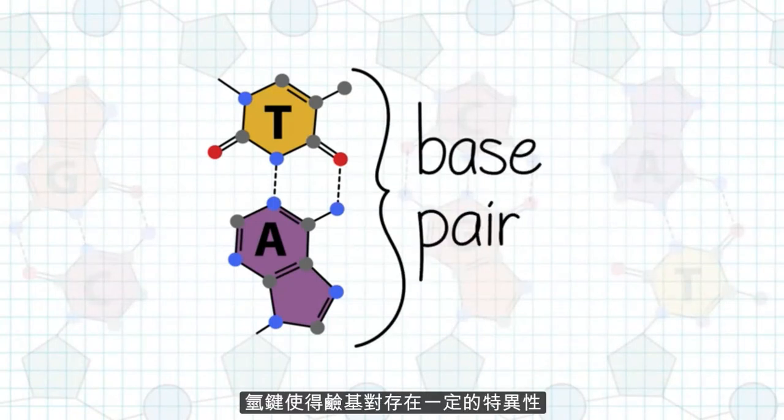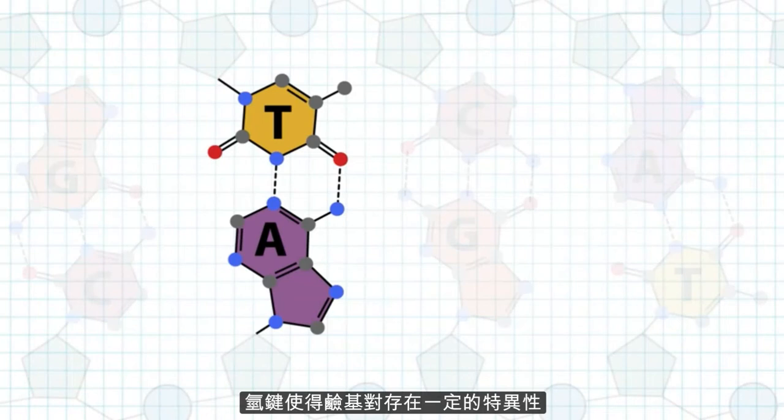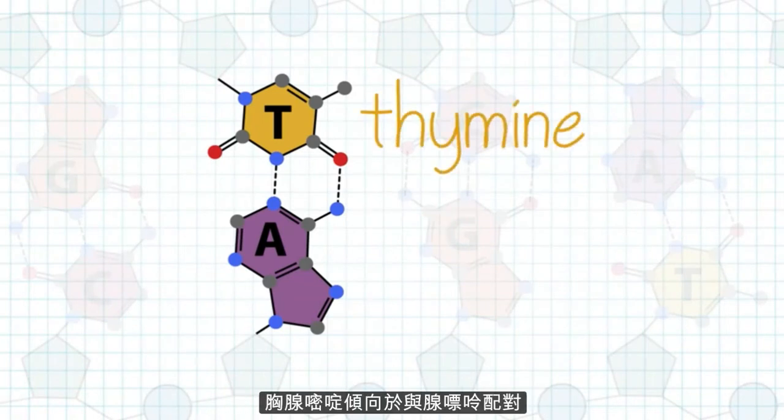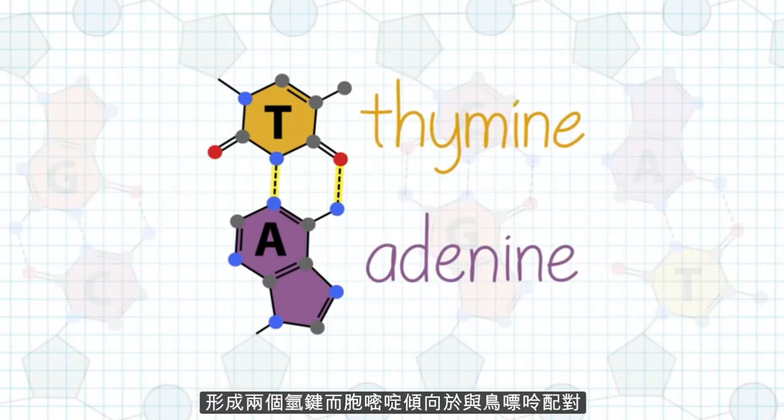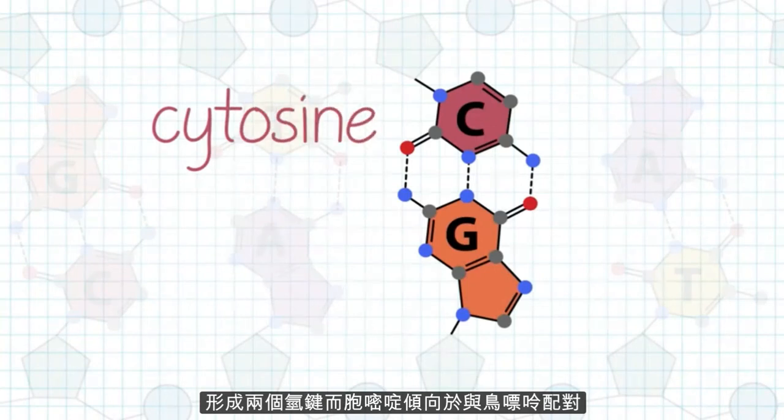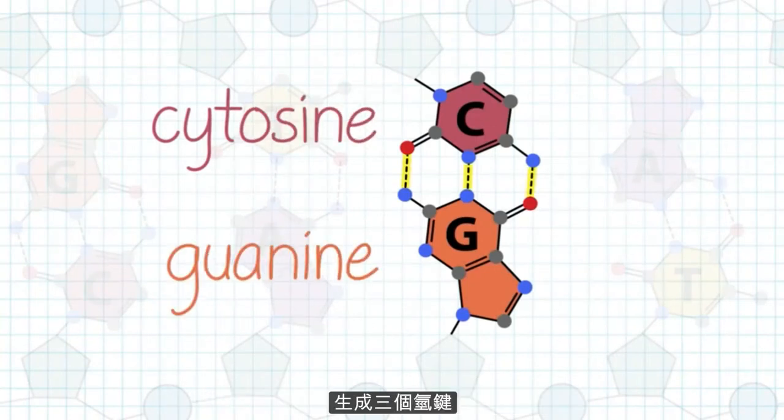The hydrogen bonding contributes to the specificity of base pairing. Thymine preferentially pairs with adenine through two hydrogen bonds, and cytosine preferentially pairs with guanine through three hydrogen bonds.